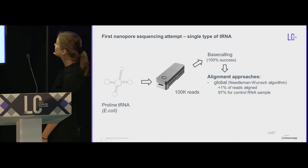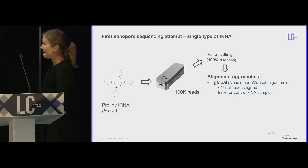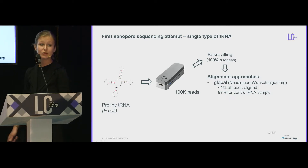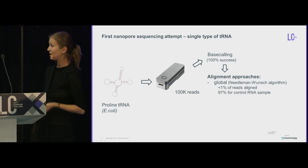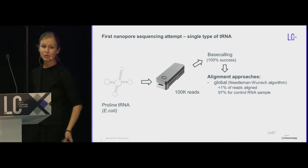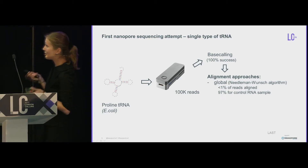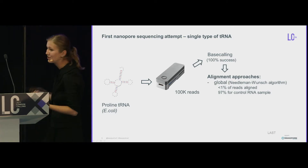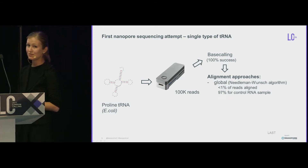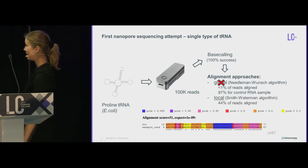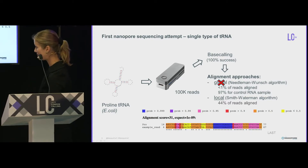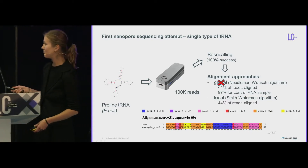Then we tried to align the reads, and here came the problem: tRNAs are too short, so global alignment was not an option. When we tried to sequence the control RNA sample provided by Oxford Nanopore, we were able to align 97% of reads — similar to what other people get — but with the same procedure we were able to align less than 1% of the tRNA reads. That's why we went for local alignment and were able to align many more reads.